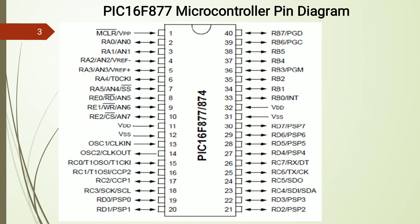Pin numbers 11 and 12 are VCC and ground. Again, pin numbers 32 and 31 are VCC and ground. So two supply connections are provided for the PIC microcontroller, as the current sink and sourcing capacity of PIC is higher compared to the MCS51. After that, oscillator connections are present, and then Port C begins.